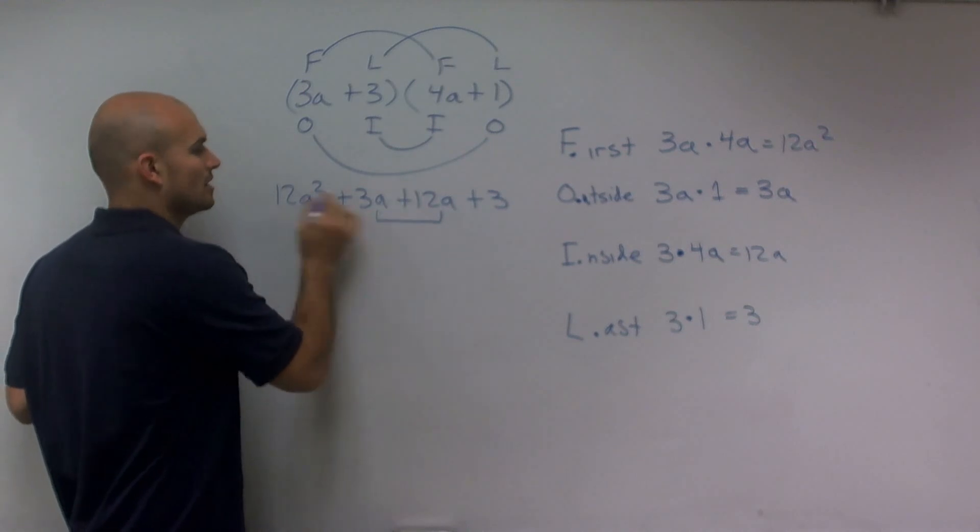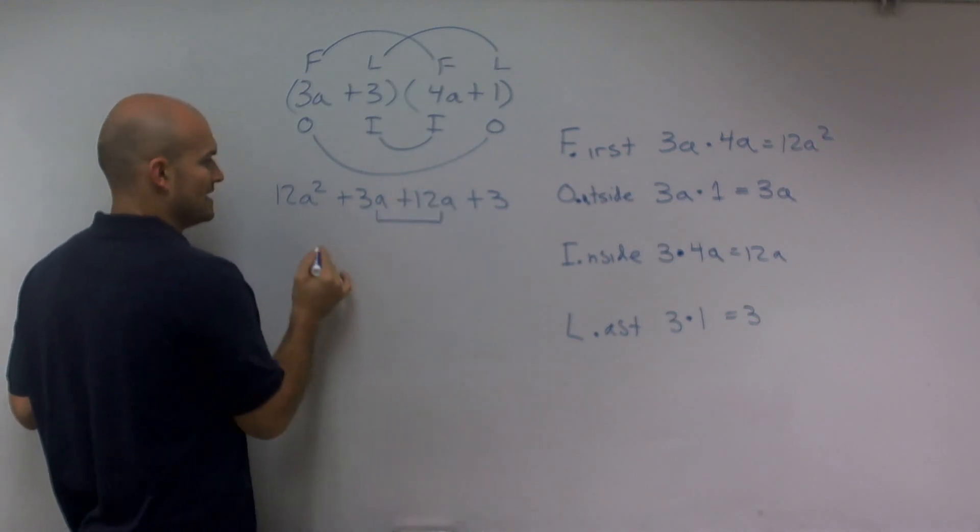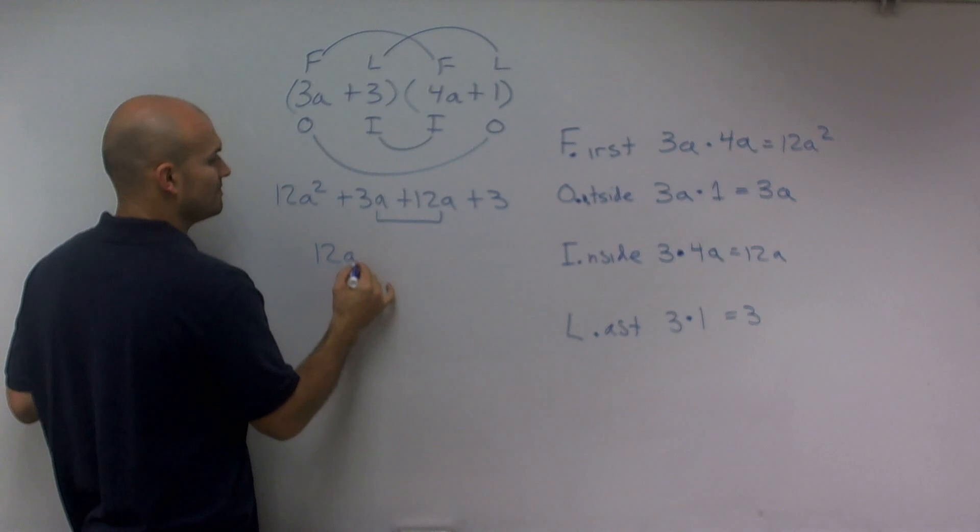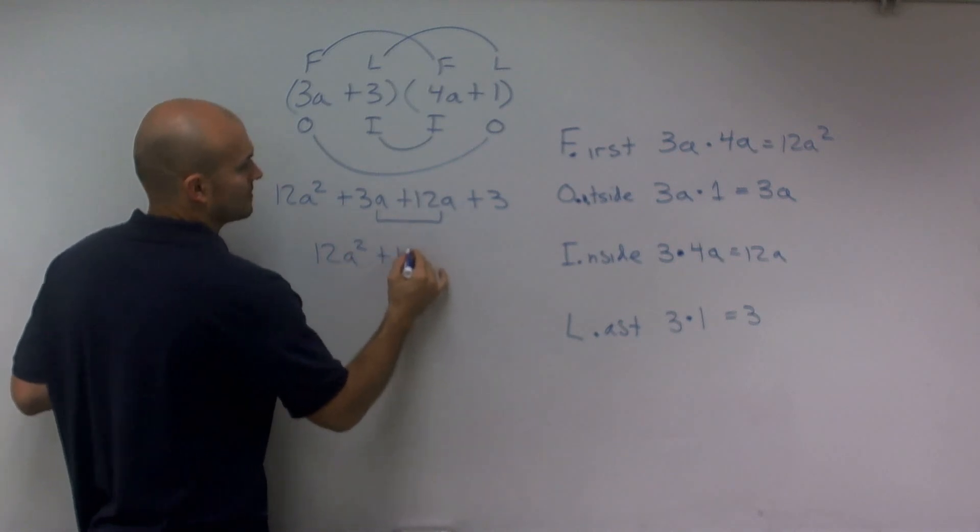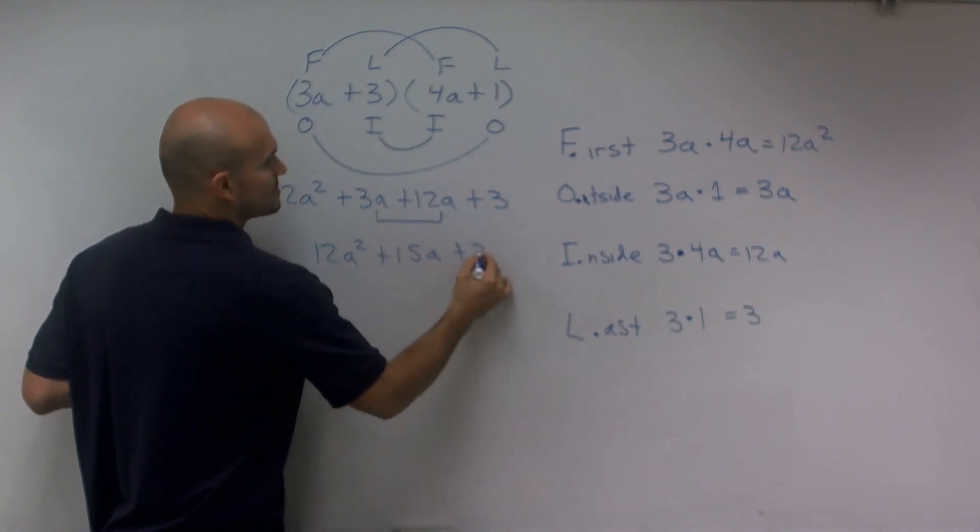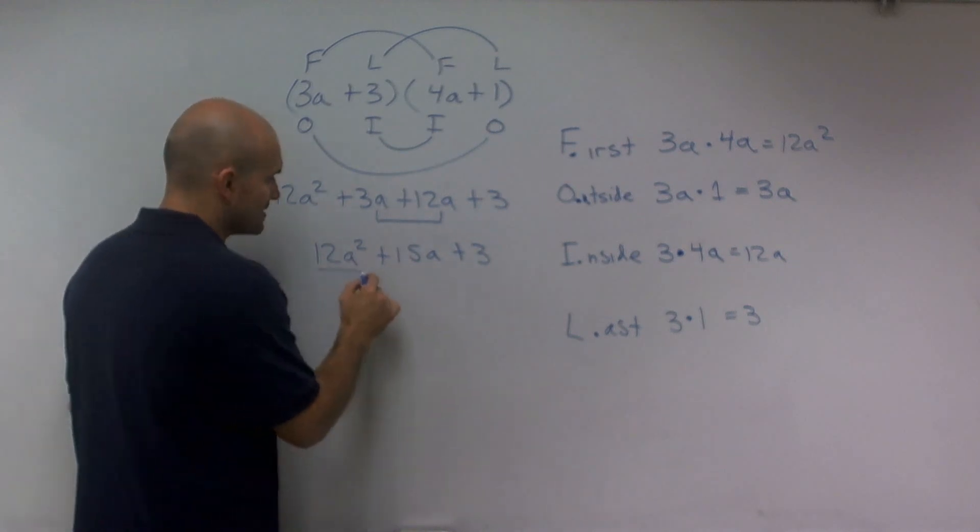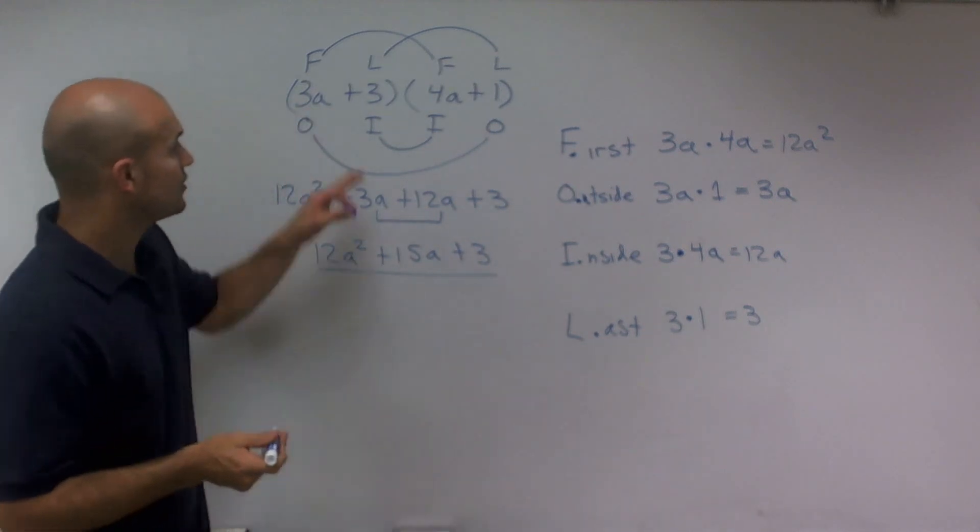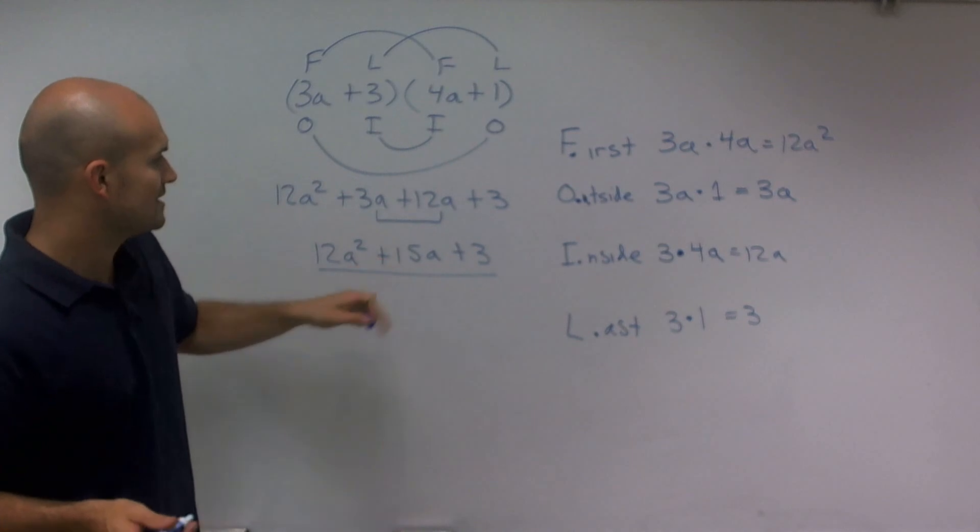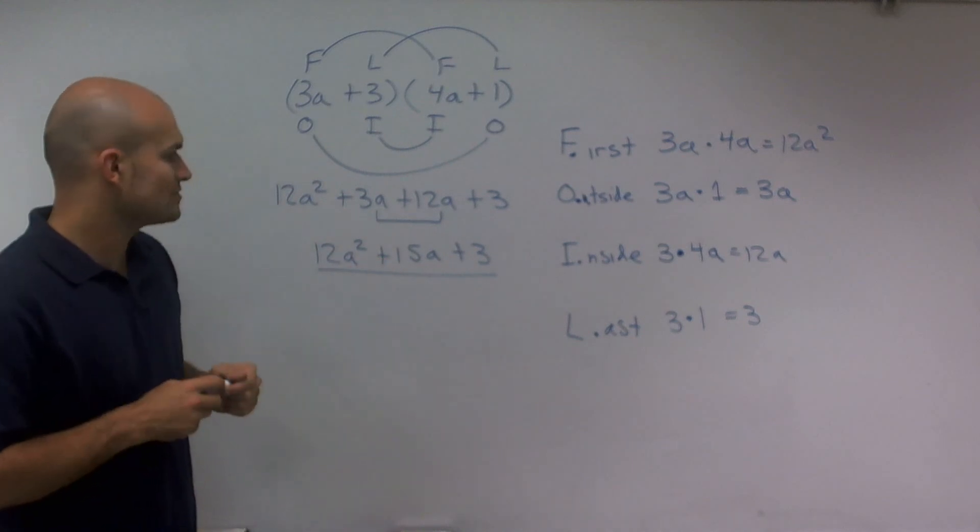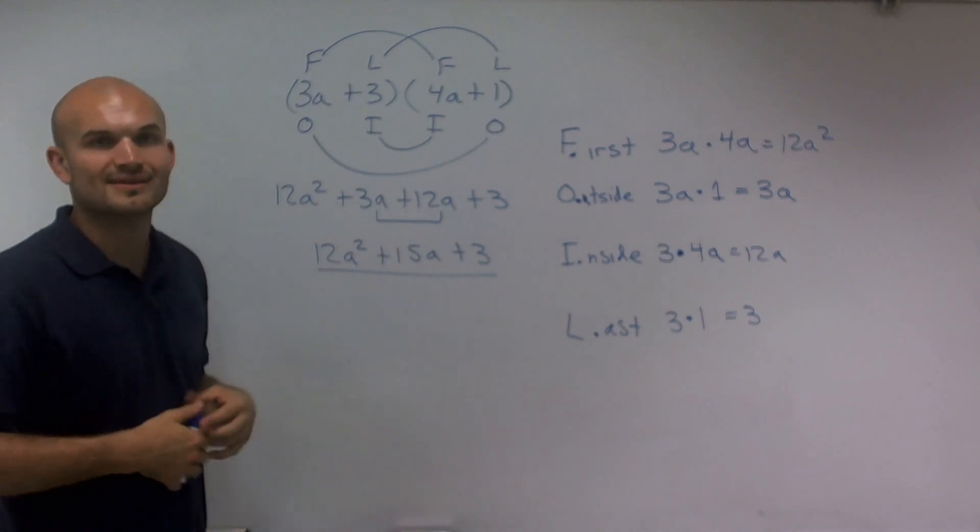So 12a squared plus, 3a plus 12a is going to provide me now with 15a plus 3. And now the product of these two binomials has just produced 12a squared plus 15a plus 3. There you go. Thanks.